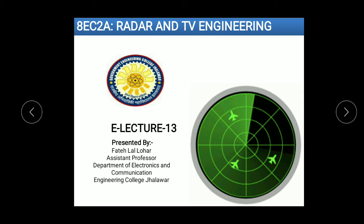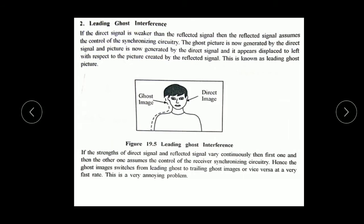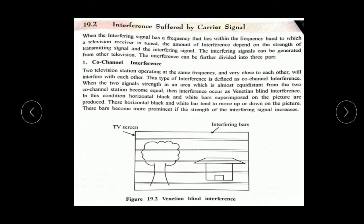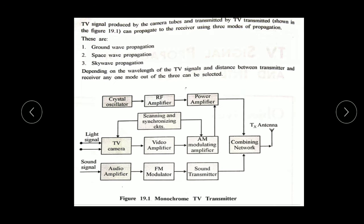In this lecture, we will discuss the modern digital TV systems — specifically the transmission section and receiving section of digital TV systems. In the last lecture, we discussed the modes of propagation of TV signals: ground wave propagation, space wave propagation, and sky wave propagation. We also discussed the monochrome TV transmitter.